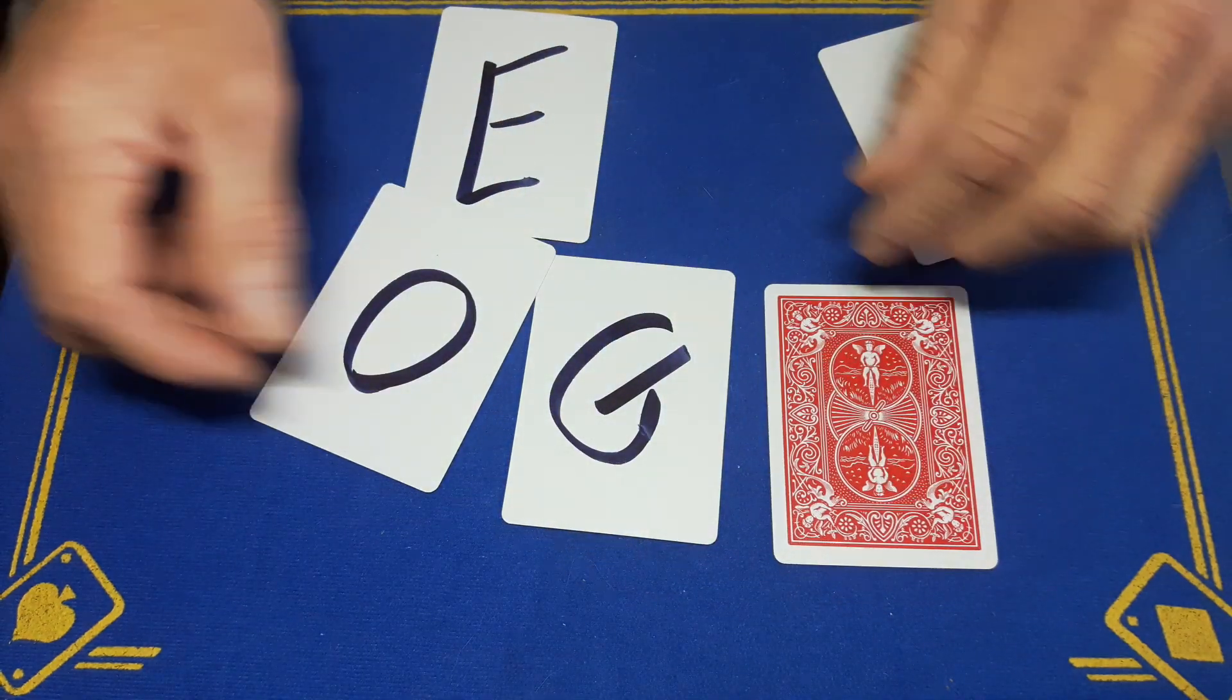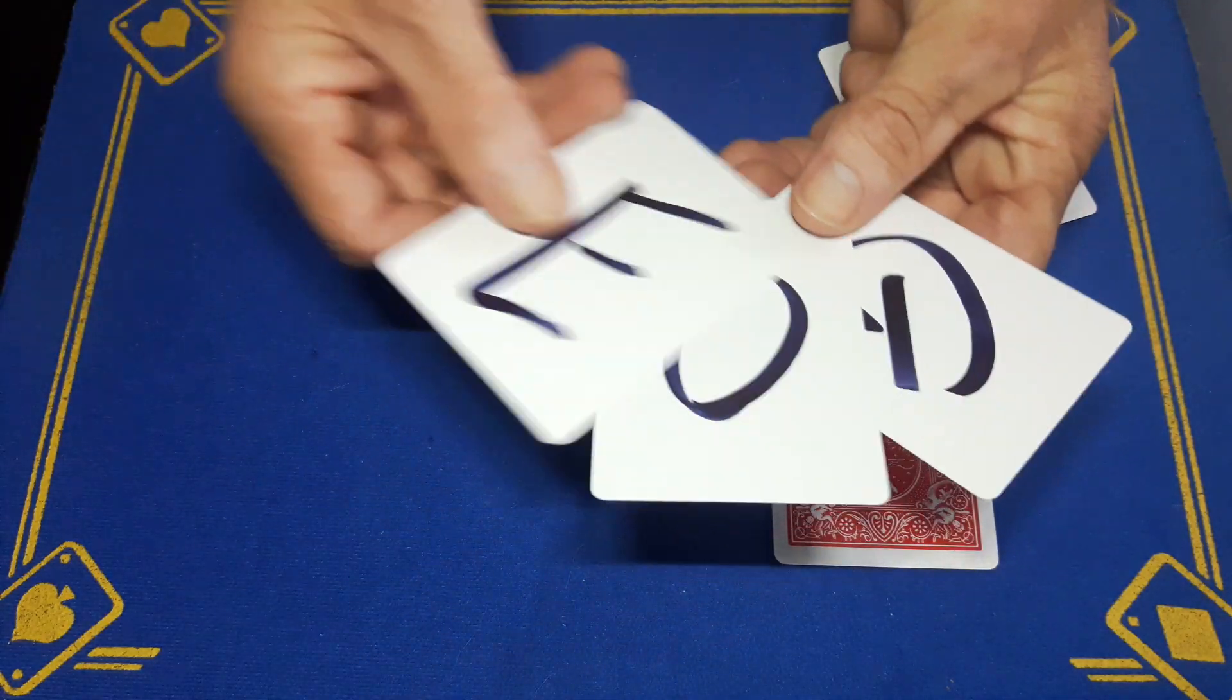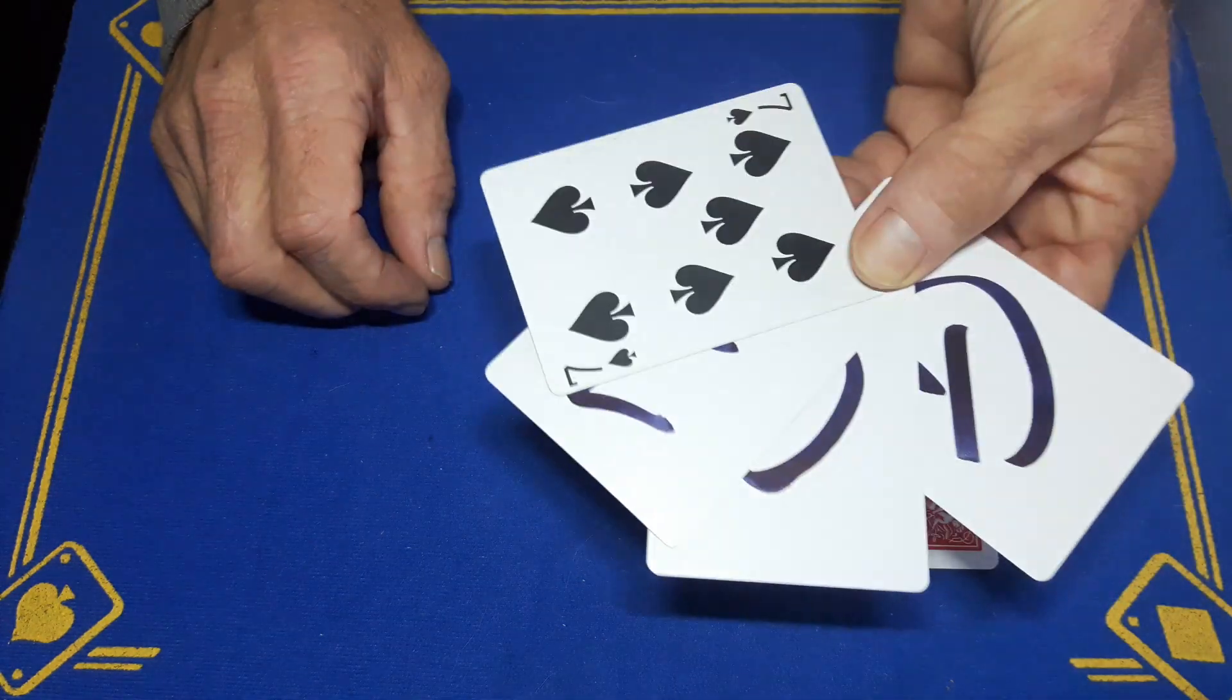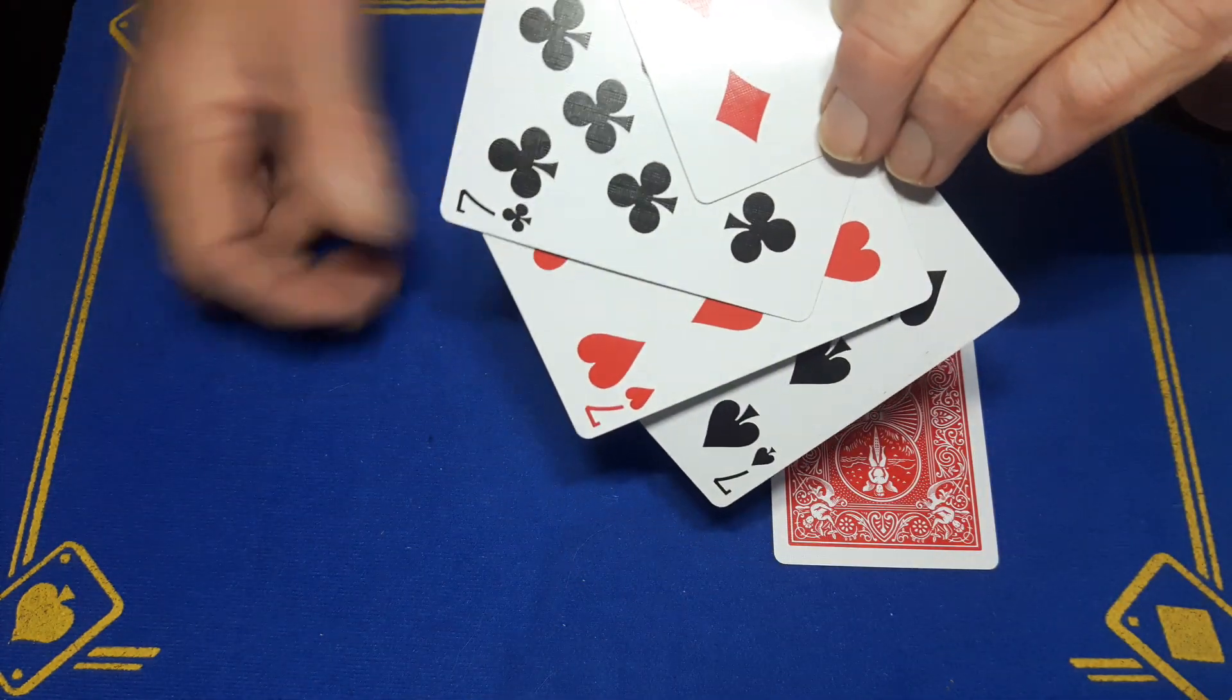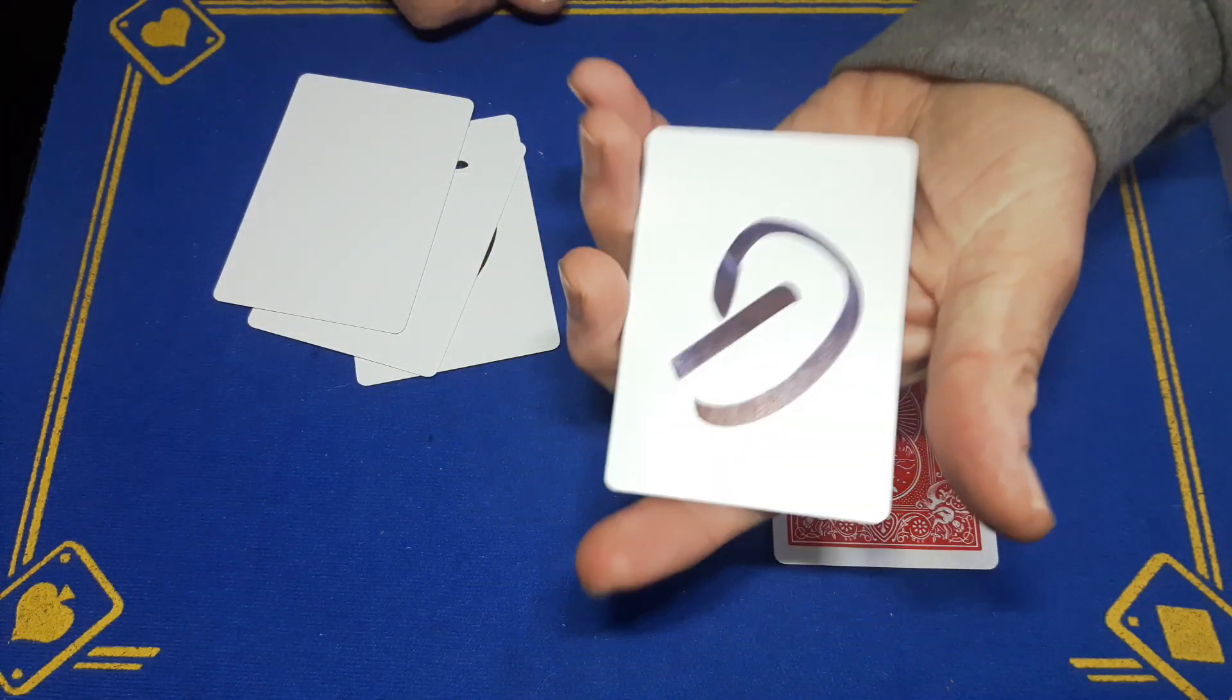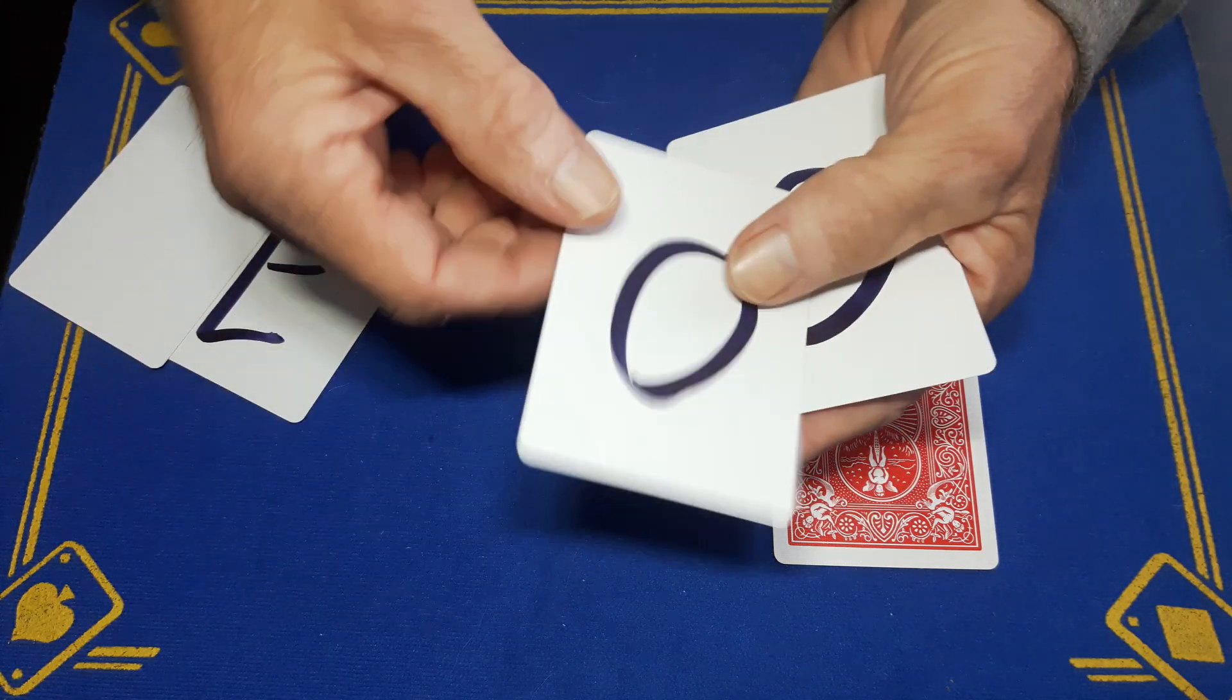You're then going to have four of a kind on blank backs. So you've got four of a kind on the face, on the back they're blank. On one of the cards you're going to write a G, so hold this in your hand.